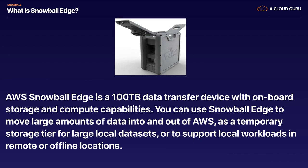We also have Snowball Edge. Snowball Edge comes in 100 terabytes and is a device with onboard storage and compute capability. You can actually run Lambda functions from Snowball Edge. This gives you compute and storage, and you can use Snowball Edge to move large amounts of data in and out of AWS as a temporary storage tier for large local datasets, or to support local workloads in remote or offline locations. For example, one major airline has Snowball Edges in their aircraft — not just storing data but also doing compute, running Lambda functions.